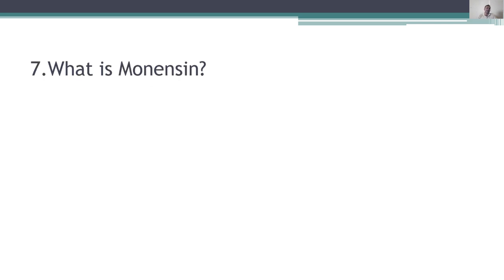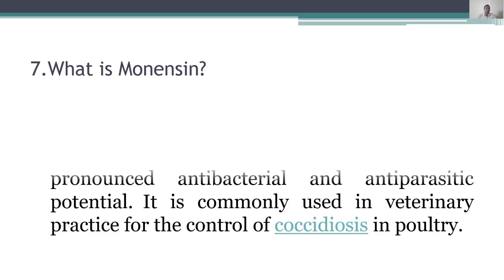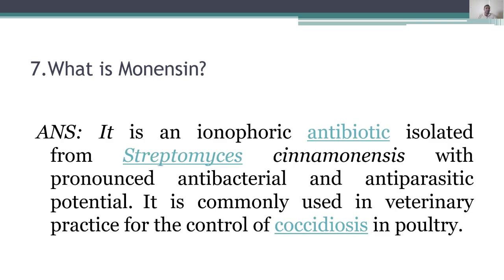Seventh question: what is monansin? Monansin is an ionophore antibiotic isolated from Streptomyces cinnamonansis with pronounced antimicrobial and anti-parasitic potential. It is commonly used in veterinary practice for the control of coccidiosis in poultry.